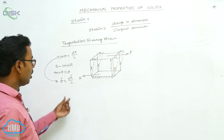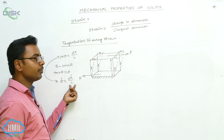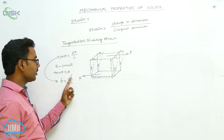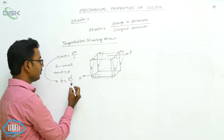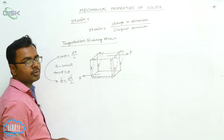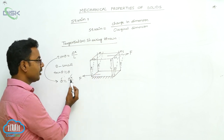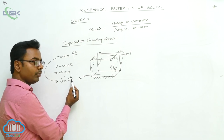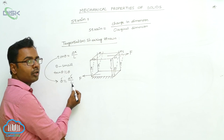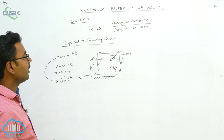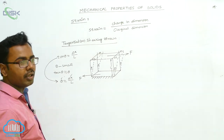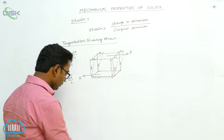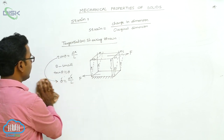Tangential or shearing strain is defined as the ratio of the displacement of the top surface to the perpendicular distance of the top surface from the bottom surface. This completes our discussion of the three types of strain, and next we move to Hooke's law.